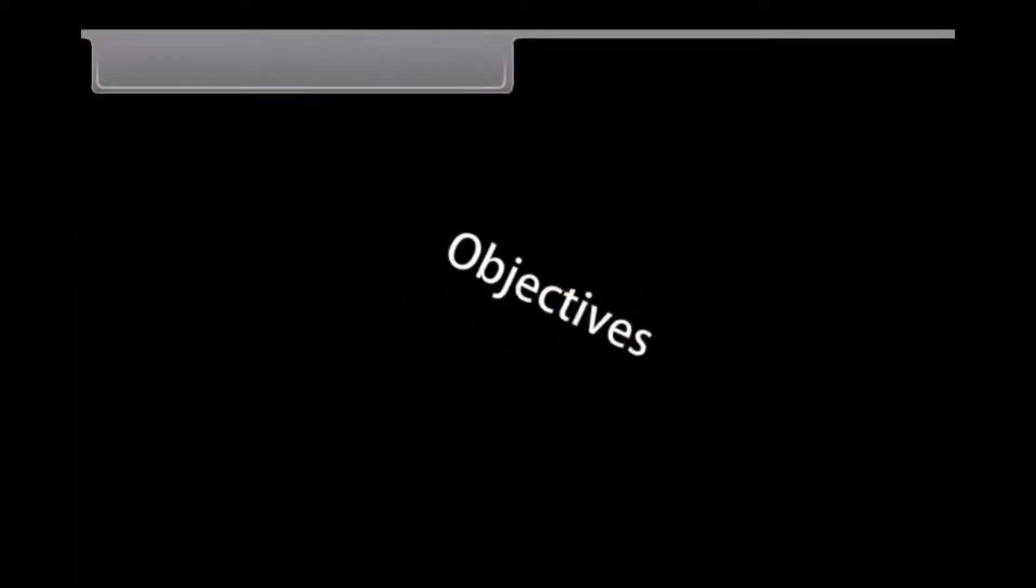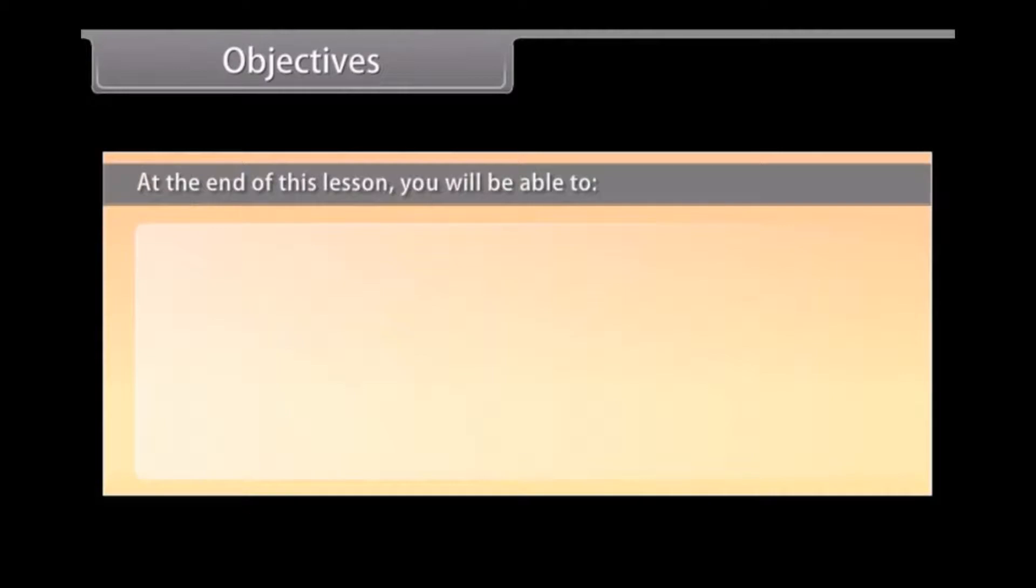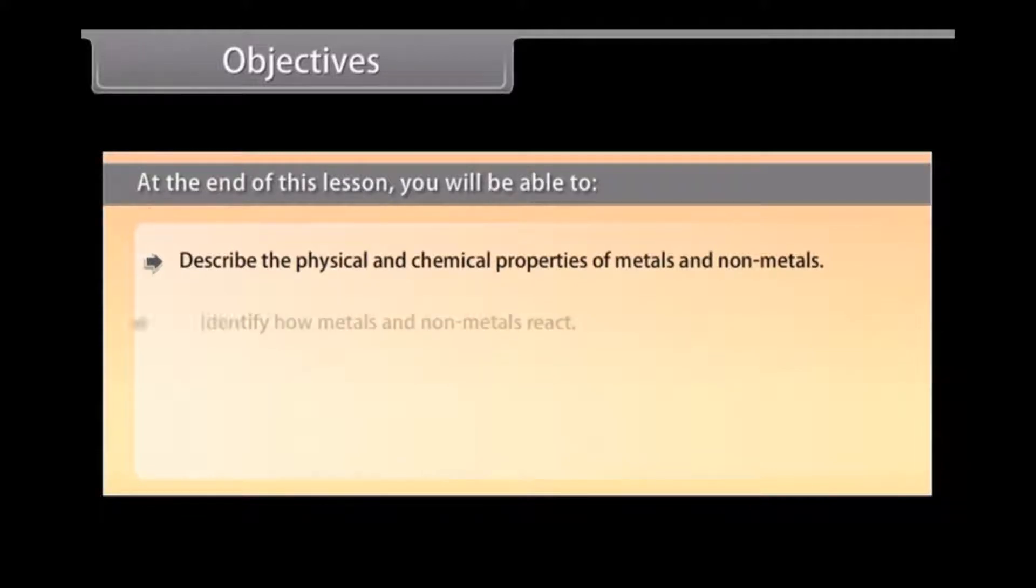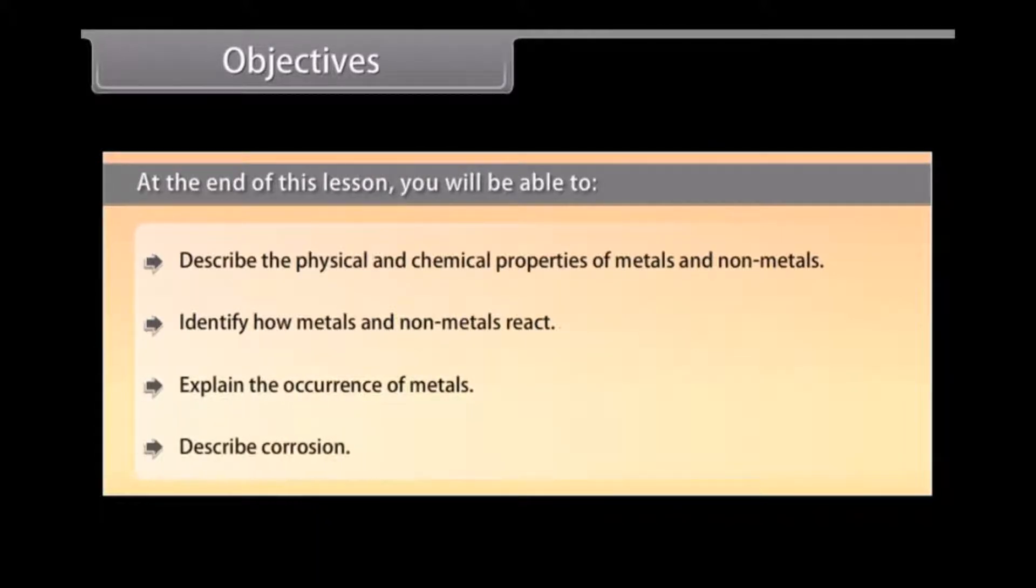Objectives. At the end of this lesson, you will be able to describe the physical and chemical properties of metals and non-metals, identify how metals and non-metals react, explain the occurrence of metals, and describe corrosion.